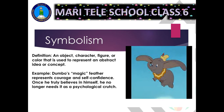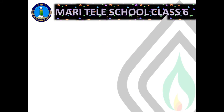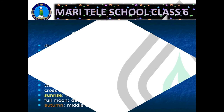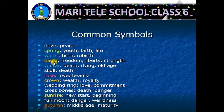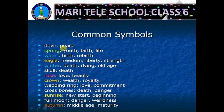The next poetic device is symbolism — an object, character, figure, or colour used to represent an abstract idea or concept. For example, Dumbo's magic feather represents courage and self-confidence; once he truly believes in himself, he no longer needs it. Common symbols include: dove as a symbol of peace, eagle as the symbol of freedom and liberty, rose as a symbol of beauty, crown as a symbol of wealth and royalty, sunrise as a symbol of a new beginning, full moon symbolising danger, and autumn representing middle age or maturity.